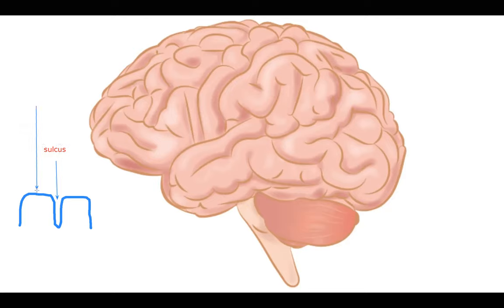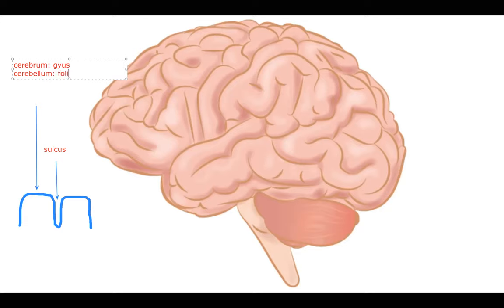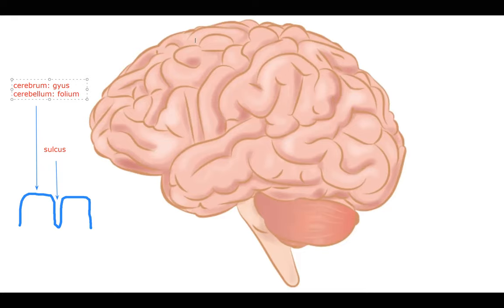Anatomists hate us, so the raised ridges on the cerebrum and cerebellum are named differently. On the cerebrum, raised ridges are called gyri (plural) or gyrus (singular). On the cerebellum, they are called folia (plural) or folium (singular). Since our first histology journey is to the cerebellum, we'll be looking at these folia and sulci.